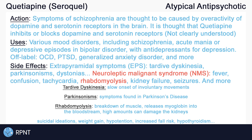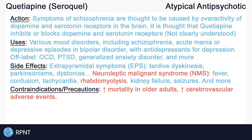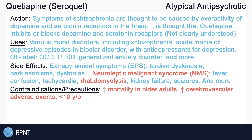It is most important to be aware of the black box warnings of quetiapine. The first is that quetiapine may be associated with increased mortality in older adults with dementia-related psychosis. Quetiapine may increase the risk of cerebrovascular adverse events, such as strokes or TIAs in geriatric patients. Another black box warning is that quetiapine should not be used in children less than 10 years old, as its safety in children has not yet been established. Avoid use in patients with Parkinson's disease. The symptoms of Parkinson's are caused by the loss of dopamine, and since quetiapine inhibits dopamine receptors, it may increase the symptoms of Parkinson's.